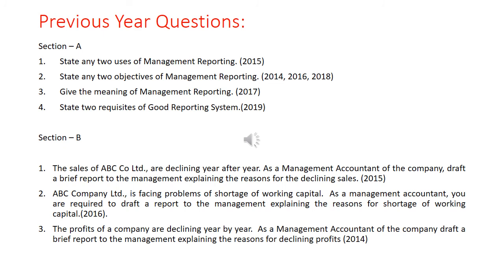The third question is: the profits of the company are declining year by year. As a management accountant, draft a brief report to the management explaining the reasons for declining profits. The specimen for this has already been discussed, with two reasons: decreased sales or increased cost of production. This is how you prepare and submit a report to the management.